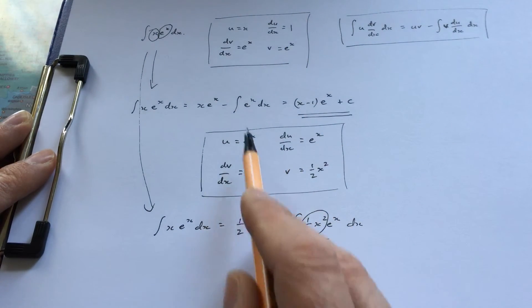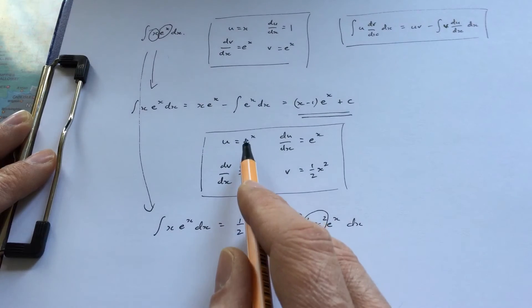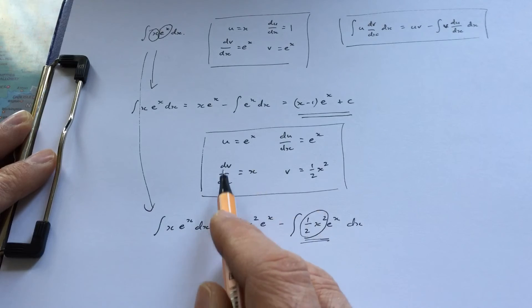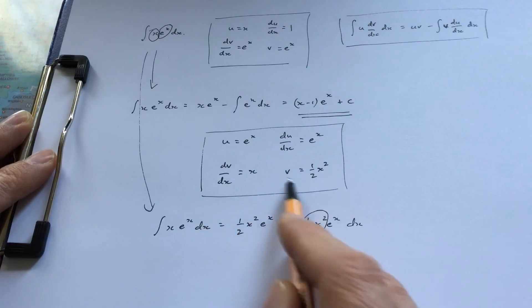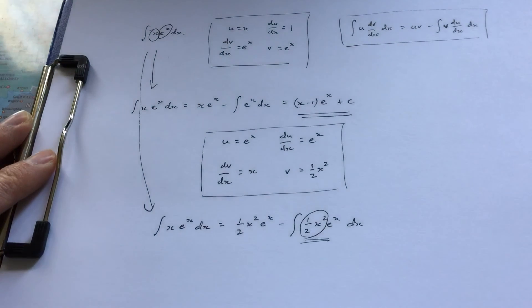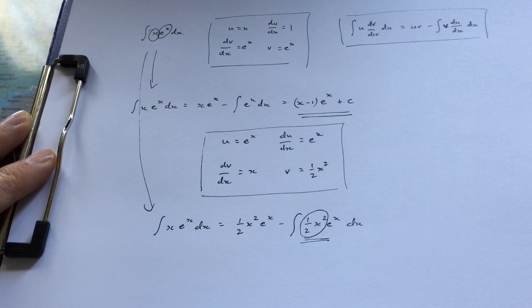If I take them the wrong way, u stays the same—that's okay—but dv/dx gets more complicated. That's not the way to go if I'm trying to simplify a function to integrate it.